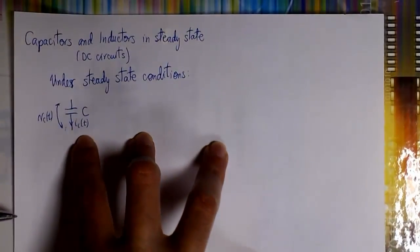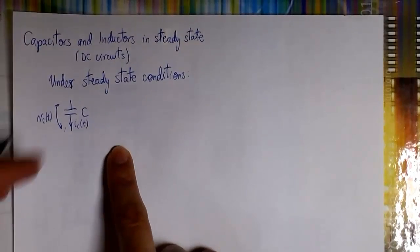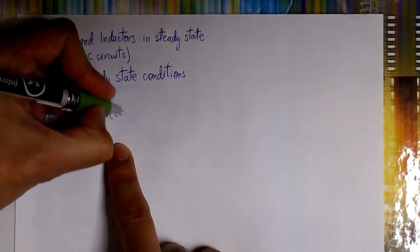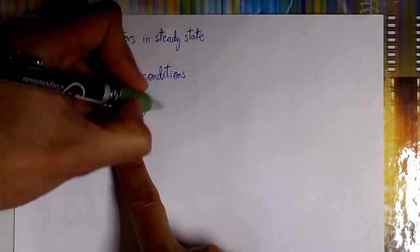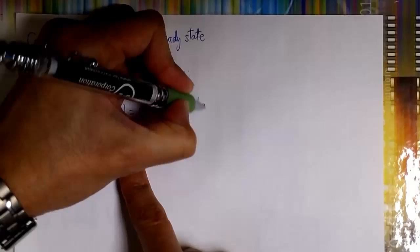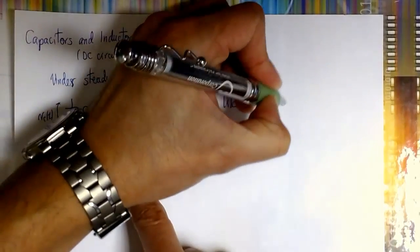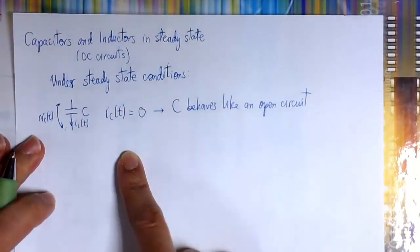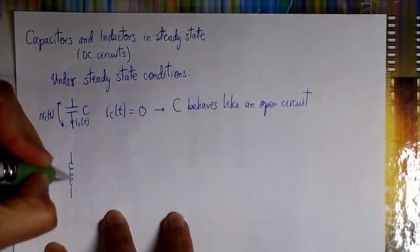We have a capacitor and we know it is under steady state conditions. The current flowing through it is zero, so we basically say it behaves like an open circuit. Every time we have a circuit and we know the capacitor has reached steady state, we can just replace it with an open circuit. There will be a voltage between its terminals but there will not be a current flowing through it.